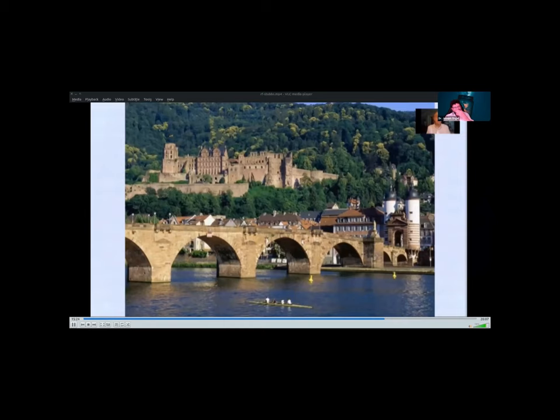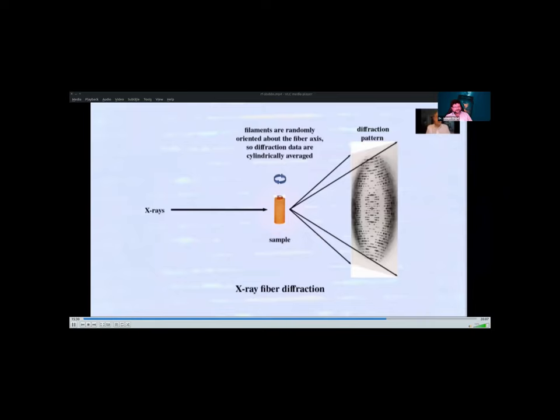At this point, the obstacle to further work on the TMV structure was the problem of overlapping intensities in fibre diffraction. In a fibre diffraction sample, the filaments that make up the fibre, that would be the individual virus particles in the case of TMV, are randomly oriented about the fibre axis. So diffraction data in reciprocal space are cylindrically averaged. That problem had not been solved at Birkbeck, but Rosalind was well aware of it.